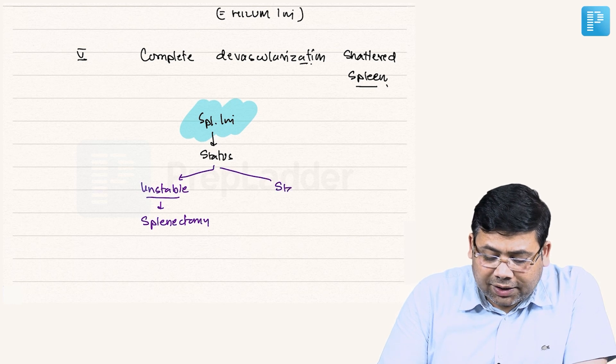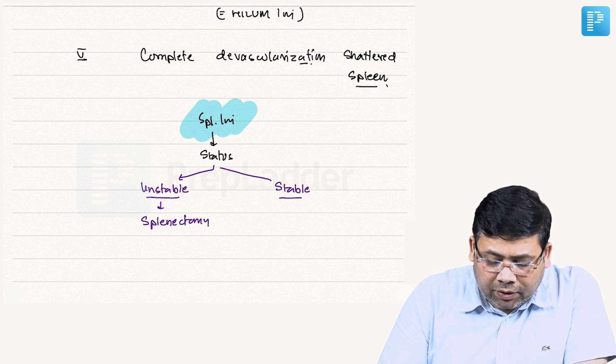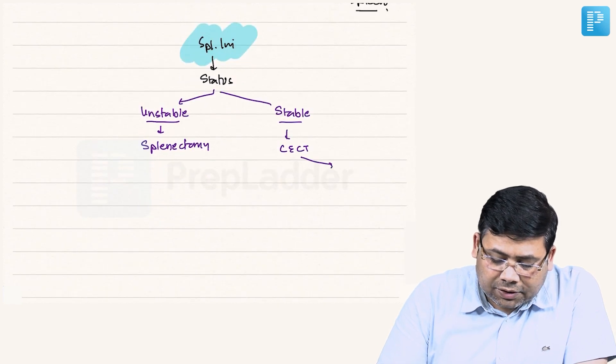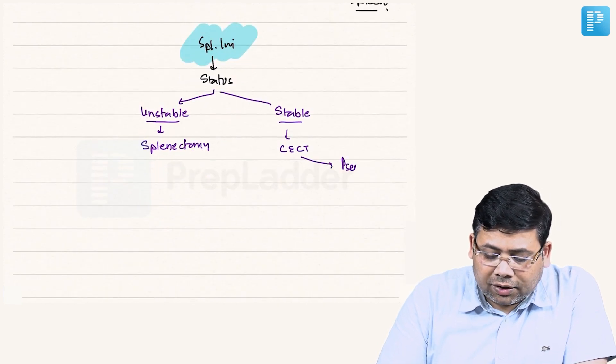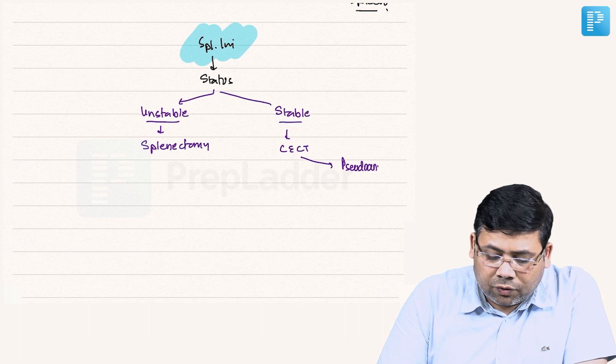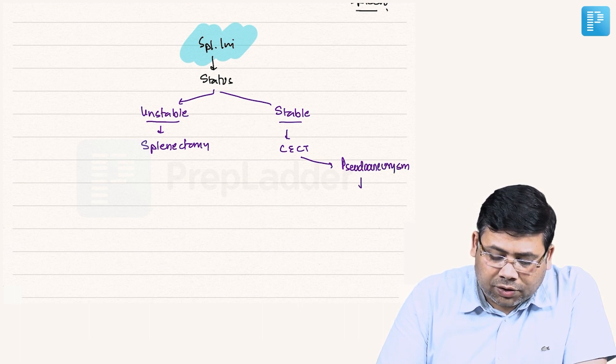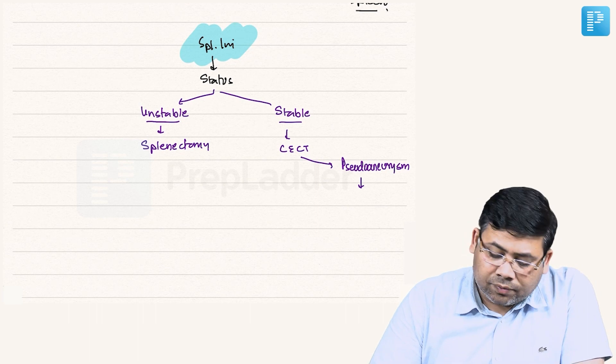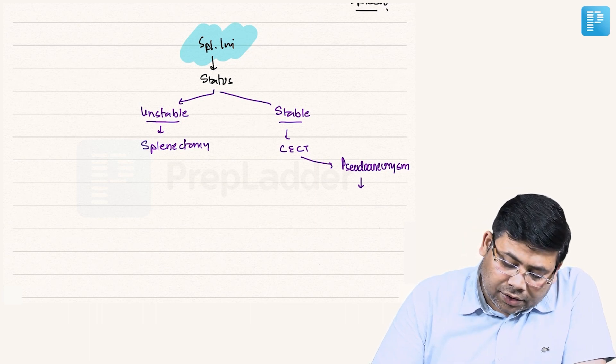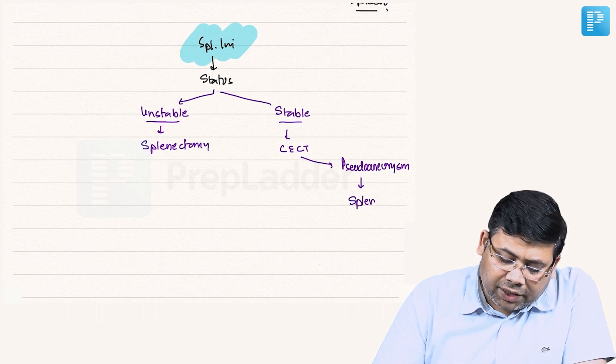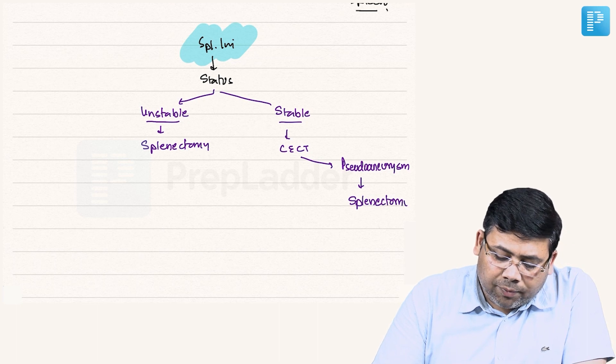On CT scan, you might get to see a pseudoaneurysm. If there is a pseudoaneurysm, go for splenectomy. Splenectomy is the preferred option. Remember, the other alternative is you can also go for angioembolization.